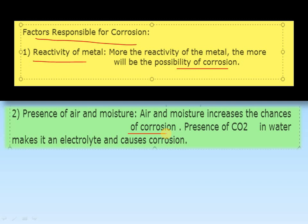For example, take two identical iron objects — keep one on the terrace and one inside a room. The one on the terrace will rust more quickly because there is more air and moisture there. Also, the presence of carbon dioxide in water makes it an electrolyte and causes corrosion. So water reacts with iron to form Fe₂O₃·xH₂O, causing rusting.